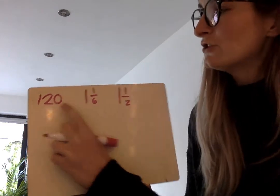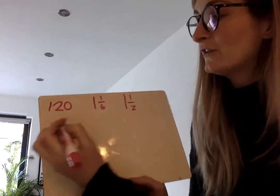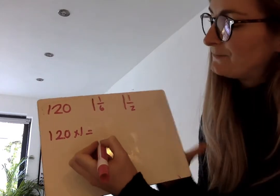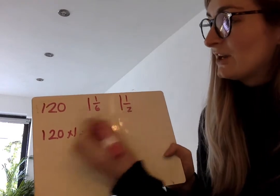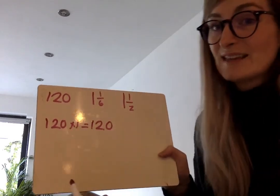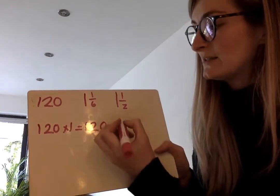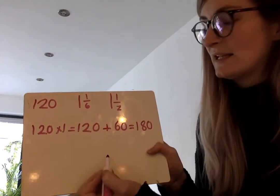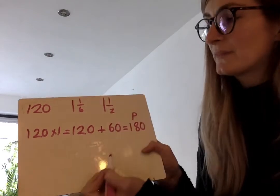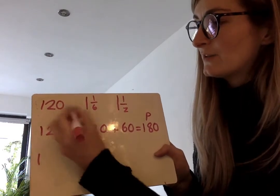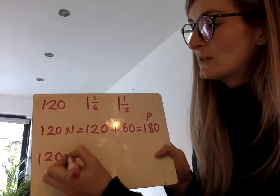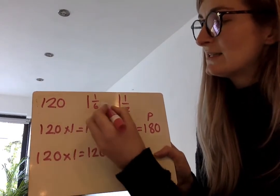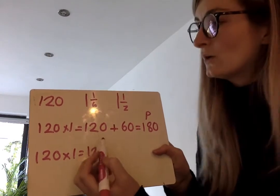120 times this pizza fraction and 120 times this bottle fraction. This one's easy. I'm going to do this one first. 120 times the whole one first. 120 times 1 equals 120. And then 120 times a half is the same as half of 120, so I know that half of 120 is 60. So 120 add 60 is 180. That's how many bottles they need.